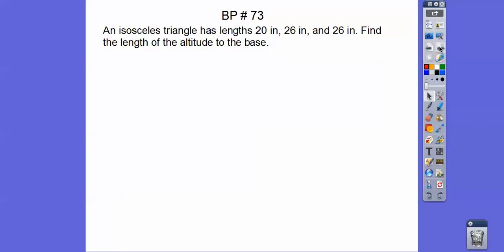My students have board problems. This is board problem 73. An isosceles triangle has lengths 20 inches, 26 inches, and 26 inches. Find the length of the altitude to the base. Draw a picture. There's our 26, 26, and 20. We're looking for that altitude right there. Since it's an isosceles triangle, the altitude bisects that base. So that base was 20, so it's 10 and 10.